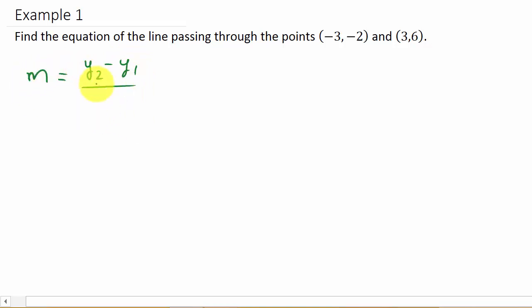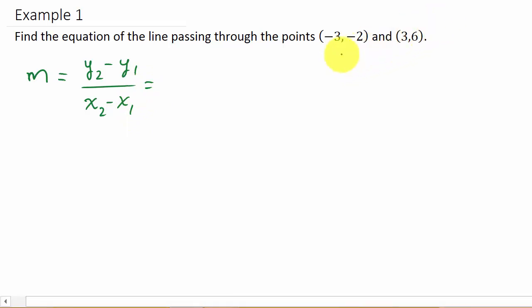The slope m is y2 minus y1 over x2 minus x1. What we'll do here is we can call this point x1, y1, and this point x2, y2. It makes no difference which one you call which. You just have to make sure that x1 and y1 are together, and x2 and y2 are together.